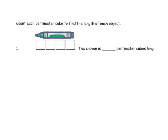It says count each centimeter cube to find the length of each object. So we've got our cubes, and we can see that for this crayon it's about four cubes long. In this case, we're using centimeter cubes, so it's four centimeter cubes long.